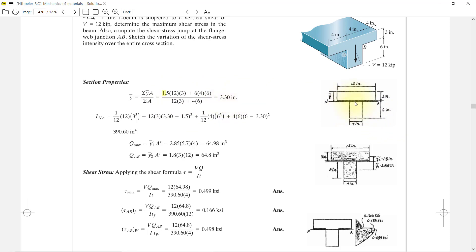Now, I about the NA line is equal to 1 by 12 bd³. So 12 multiply by 3³ divided by 12, plus area times d², so multiply by 3 times 3.3 times 1.5 squared as the distance to this line.